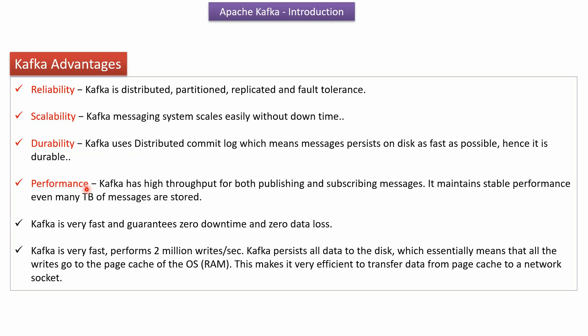Performance: Kafka has high throughput for both publishing and subscribing messages. Kafka maintains stable performance even when many terabytes of messages are stored. Kafka is very fast, guarantees zero downtime and zero data loss, and performs two million writes per second. Kafka persists all data to the disk, which means all writes go to the page cache of the OS, making it very efficient to transfer data from page cache to a network socket.